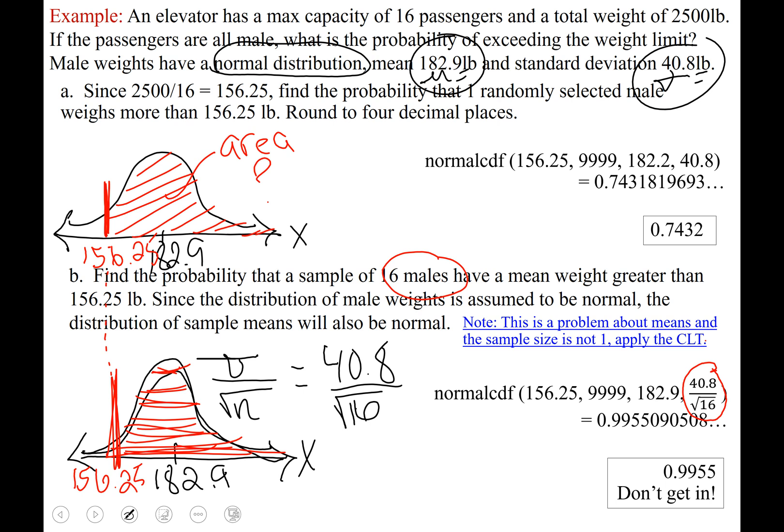Do not get in that elevator. Let's put this into perspective, if you take a sample of 16 males, 99.5% of the time if they all got in that elevator the safety total weight limit of 2500 pounds would be exceeded. And so although it was very useful information that 74 percent of males weigh more than that 156.25 pounds, it's quite a bit more valuable especially when we're talking about the safety of any living being to know that the probability of that elevator exceeding the weight limit if all the passengers are males is 0.9955 is something that we cannot ignore.